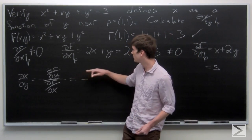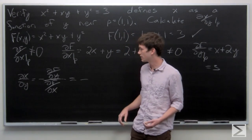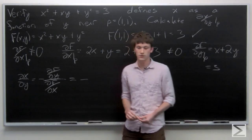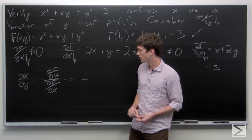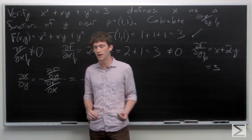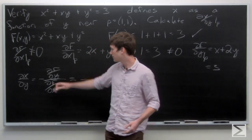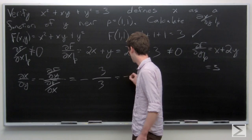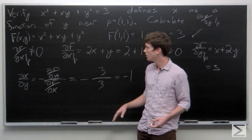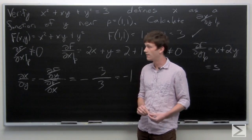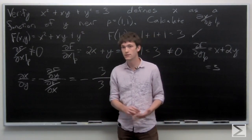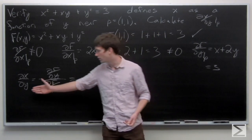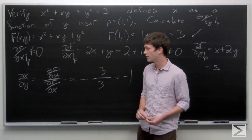So our partial derivative of f with respect to x at p is 3, and our partial derivative of f with respect to y at p is also 3. So we want to calculate the partial derivative of x with respect to y, and that's the negation of 3 over 3, or just negative 1. So we verified that f defines x as a function of y near p, and then we calculated our partial derivative of x with respect to y.